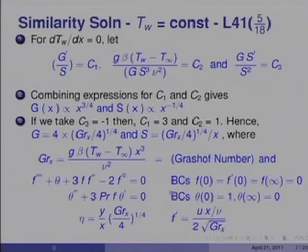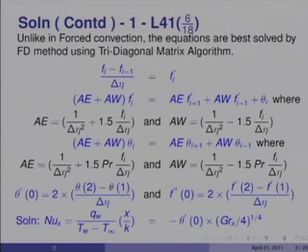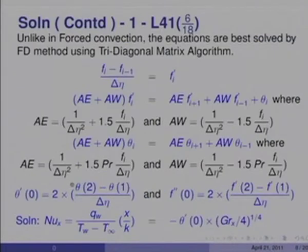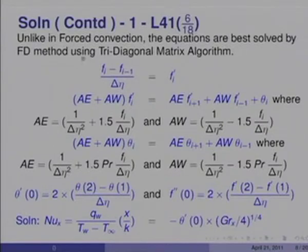How are these equations to be solved? These are coupled equations and must be solved simultaneously. Like in forced convection we could use the shooting method, but it turns out to be a little unstable for natural convection. Therefore, unlike in forced convection, the equations are best solved by finite difference method using what is called the tridiagonal matrix algorithm (TDMA), which you must have studied in your numerical analysis class.